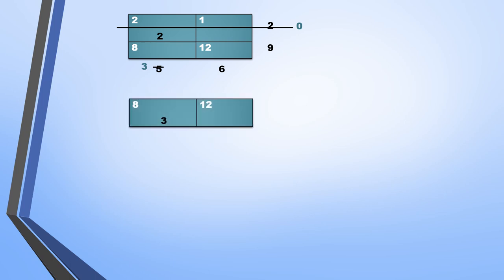Again we check the next active top-left cell, which has cost 8. The supply is 9 and the demand is 3. Since demand has been completely met, we strike that entire column. Supply becomes 9 minus 3 equals 6, and demand becomes 3 minus 3 equals 0.